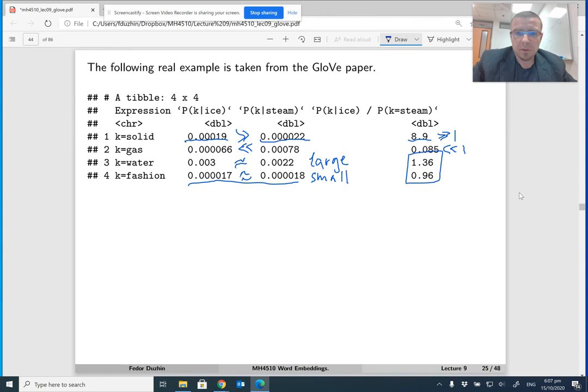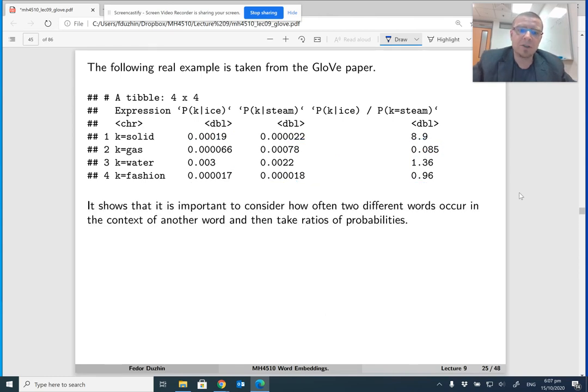So, the purpose of this exercise is to show that it is important to consider these word co-occurrences and that ratios of probabilities, they somehow capture the semantic meaning of our words.